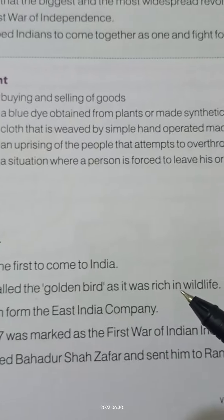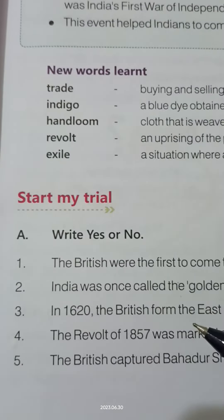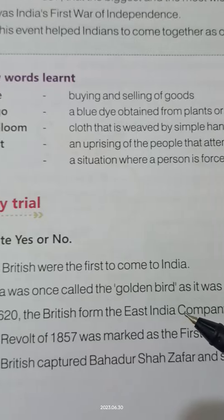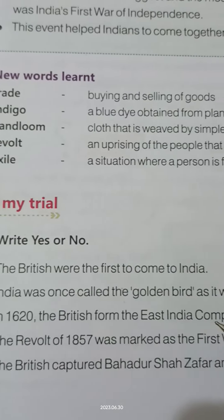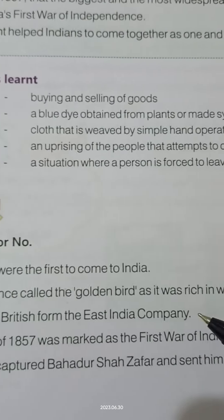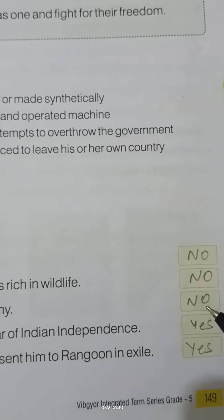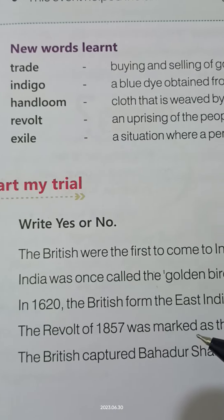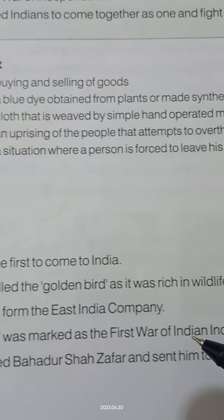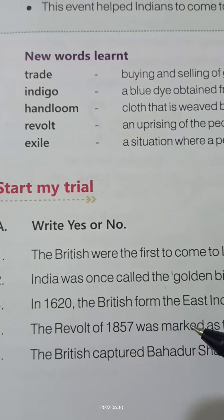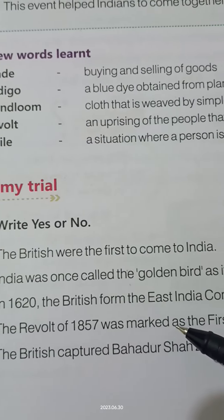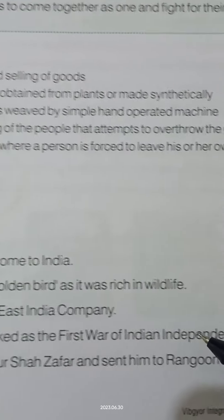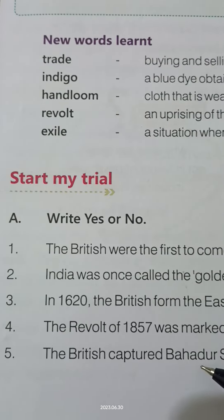Number three: In 1620 the British formed the East India Company. Answer: No. Number four: The revolt of 1857 was marked as the first war of independence. Answer: Yes.